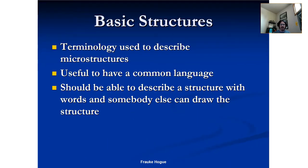Basic structures — this is a big deal. We tend to speak a different language as metallurgists, so terminology used to describe microstructures is actually useful as a common language. When you write something in an academic journal, a technical report, or talk to your metallurgy friends, you know what each other is talking about. You should be able to describe a structure with words and someone else can draw it. That's Frauk Hoag's opinion, and it's a pretty interesting standard.